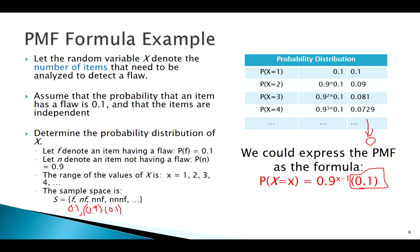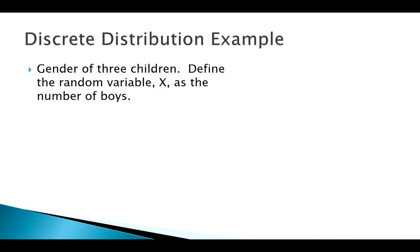Let's look at another example here. Say you're having three children and we're calling the random variable the number of boys. Maybe you could picture this sample space in your head. The obvious ones are three girls, three boys, but then the question is, is boy boy girl different from boy girl boy?